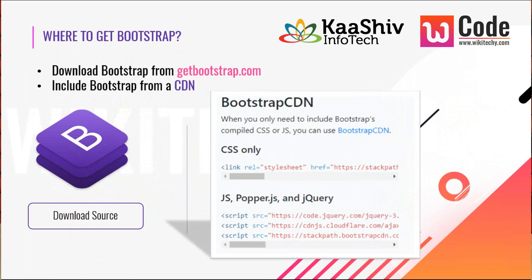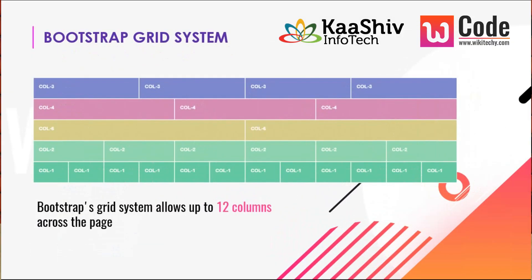To get Bootstrap there are two options: download all the libraries and code from getbootstrap.com, or use a CDN — Content Delivery Network. With CDN, the entire libraries are on cloud servers and you access them via URLs. If you want CSS, just call it; if you want JavaScript, call it. That's how CDN is used.